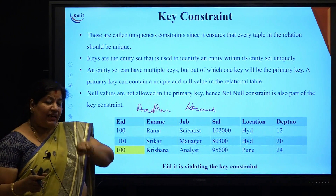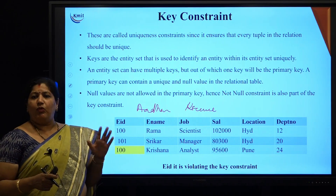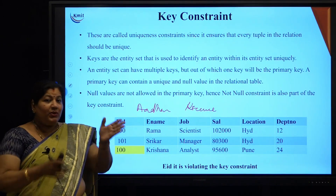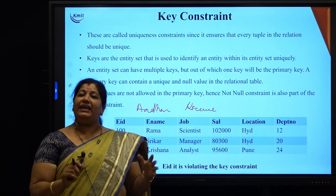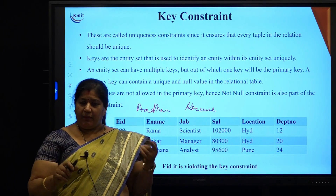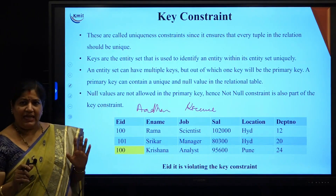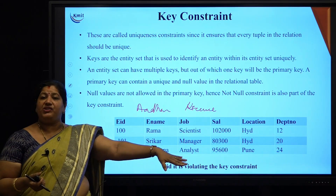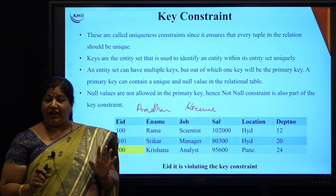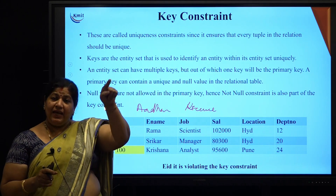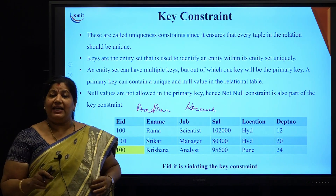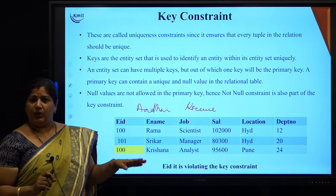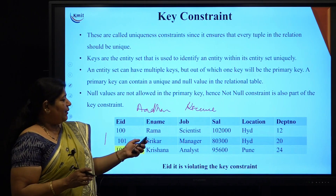Candidate keys can be a single attribute or a combination of one or more attributes, and one among them will become a primary key, because all candidate keys are capable of uniquely identifying a record but one among them is selected as primary key. For example, for a student, I would have a student roll number which can uniquely identify, and I may also have Aadhar or PAN number which are also capable of uniquely identifying that particular row. So when I talk about key constraints, it can be any of those.